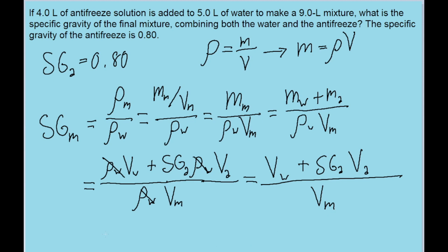Now we have this equation entirely in terms of things we have, because we're given the volume of the water, the specific gravity of the antifreeze, the final volume of the mixture, and the volume of the antifreeze. So that's everything we need, and we don't even need to do any unit conversions. Putting this into our calculator, we find a specific gravity for the mixture of about 0.91.